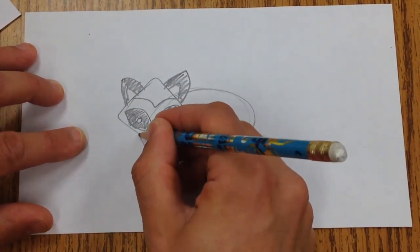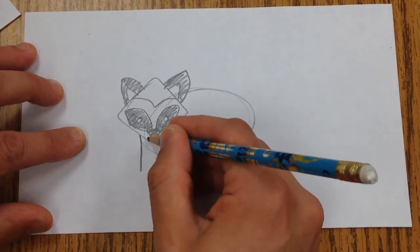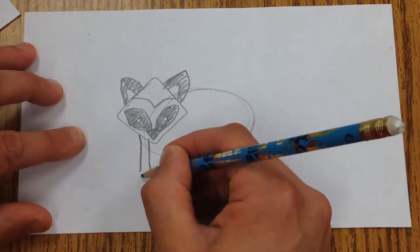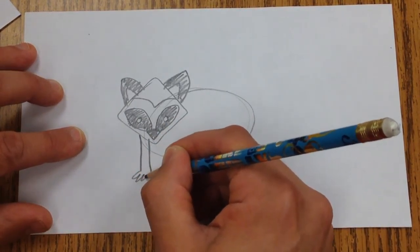And then I'm going to make the arms. Two straight lines. They have little toes.